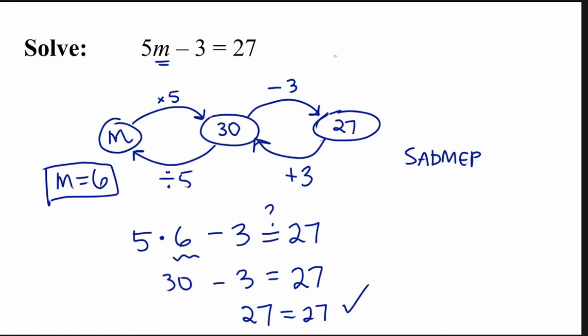But let's say that I didn't have time to make a flowchart. I can't always be making flowcharts to solve every problem. Well, let's start from the beginning again, 5M minus 3 equals 27. And let's use SADMEP to help us. We're going to have to undo some multiplication and some subtraction here. And because we're going in reverse PEMDAS order, I'm going to undo the subtraction first. So I'm going to add 3 to both sides.